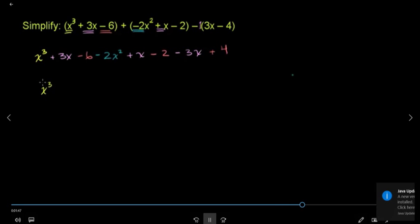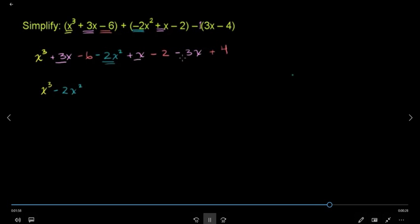The 2x will work on the 2x, and this is 2x square. The x will be divided by the x, and the 3x will cancel.